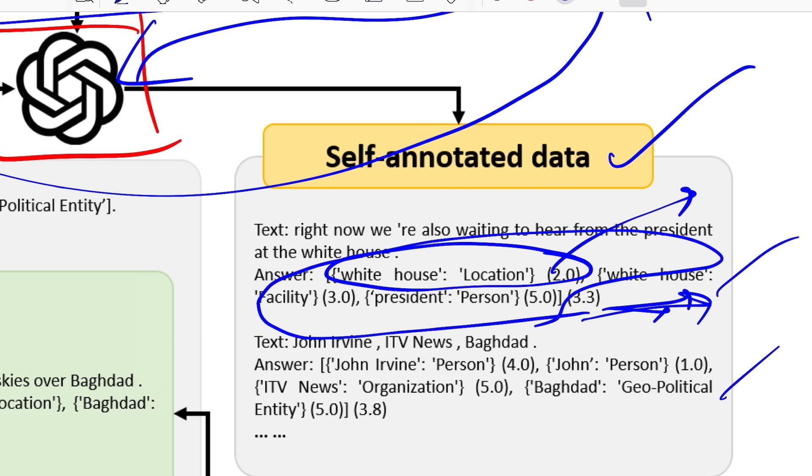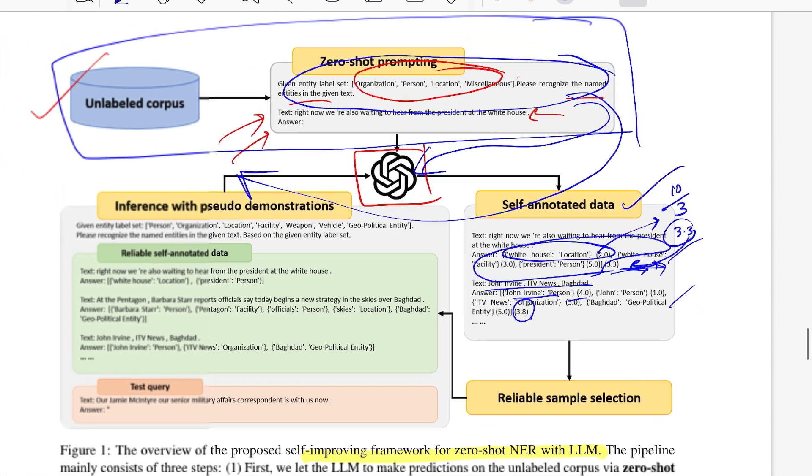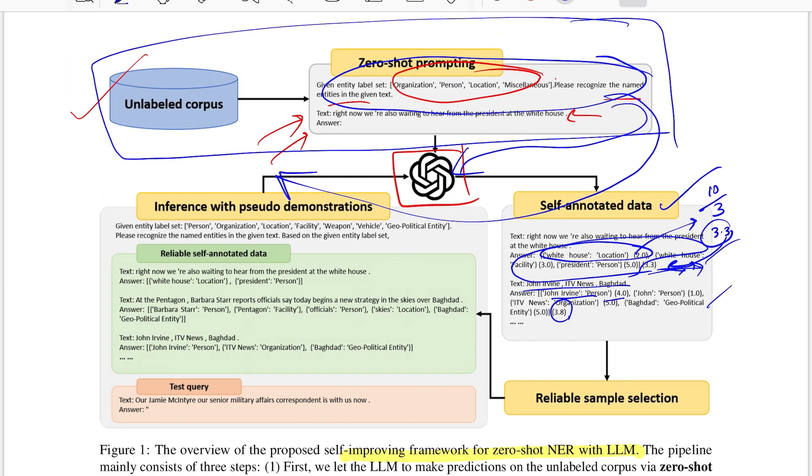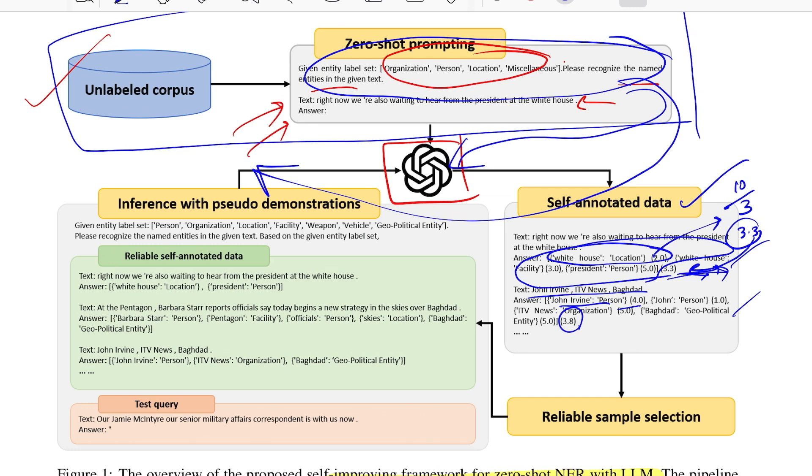Clearly in this case it says I am three points confident saying it is a facility than saying it's a location. And 3.3 comes from just averaging out the values which is 5 plus 3, 8 plus 2, 10 divided by 3 because it predicted for three entities which comes out to be 3.3. And similarly for another row in that unlabeled corpus it predicted all the entities and the confidence around them and then the confidence around the entire sample. So this exercise is done on all the data that you have in your unlabeled corpus in a zero-shot manner and this step is called self-annotated data.